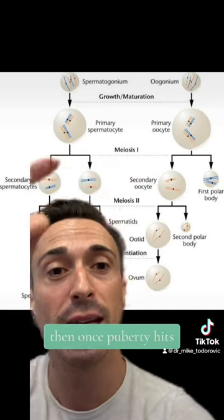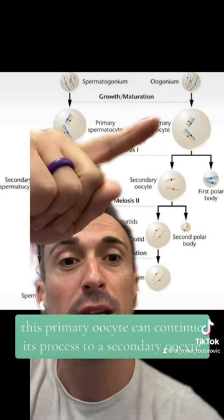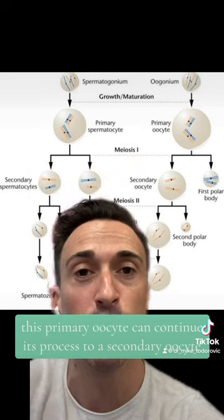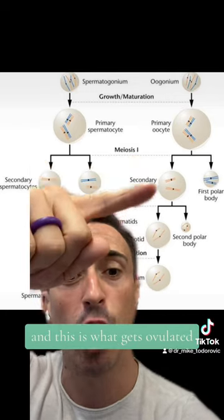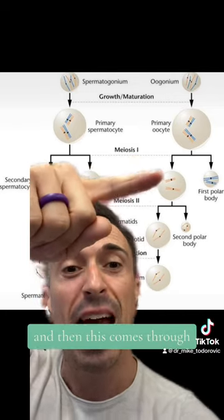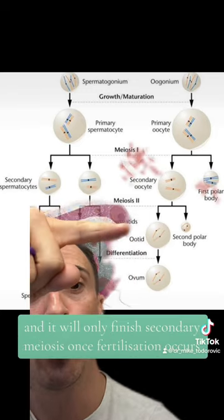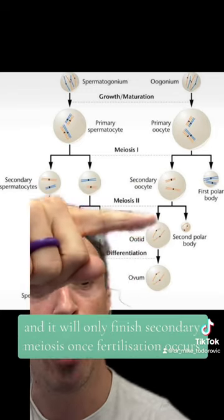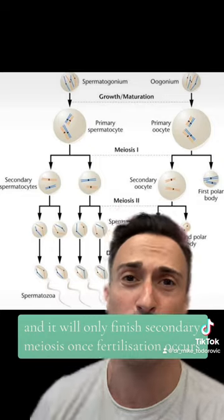Once puberty hits, this primary oocyte can continue its process to a secondary oocyte, and this is what gets ovulated. It will only finish secondary meiosis once fertilization occurs.